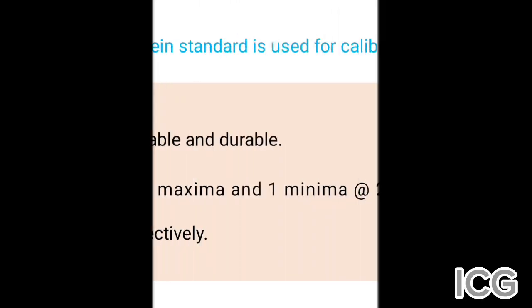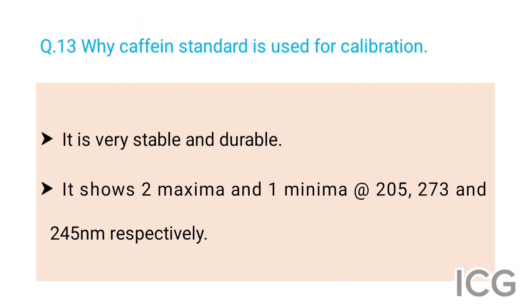The next question is: why is caffeine standard used for calibration? The answer is there are two reasons. Number one, it is very stable and durable. Number two, it shows two maxima and one minima at 205 nm, 273 nm, and 245 nm respectively.